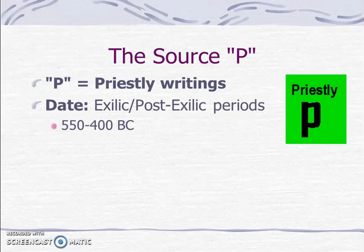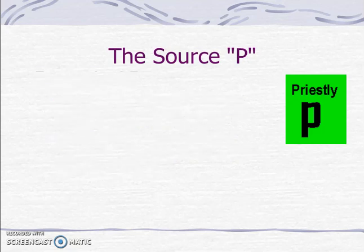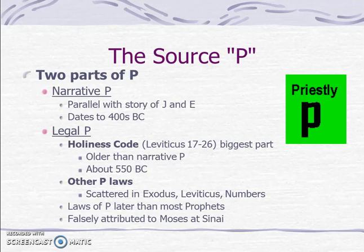Then comes the source P, meaning the priestly writings. P dates to 550 B.C. to around 400 B.C., depending on which part you are looking at. The character of the P source was an interest in the cult — meaning Israel's organized worship — reflecting the interests of priests: sacrifices, building the temple, festivals, and various rituals. There are two parts of P: narrative P, which is parallel with the story of J and E and dates to around 400 B.C., and legal P, which includes the Holiness Code in Leviticus 17–26, which is older, dating to around 550 B.C. Other P laws are scattered throughout Exodus, Leviticus, and Numbers.